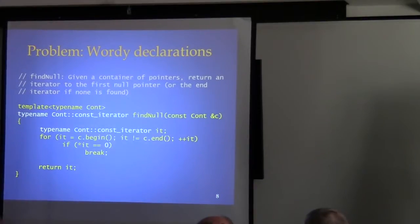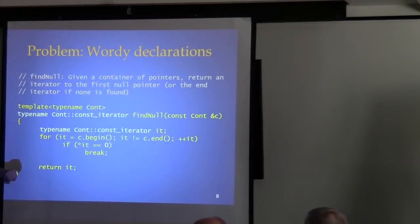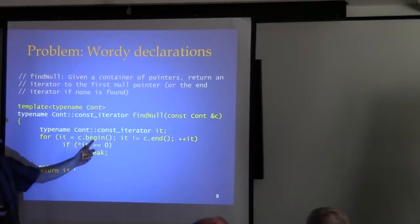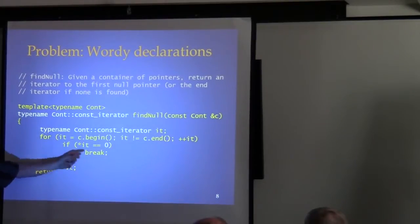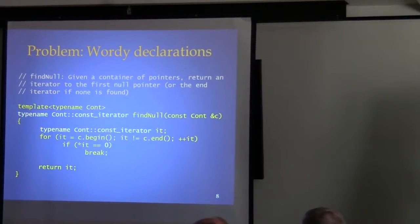So you have to say typename. We iterate across the container looking for a null — dereferencing each iterator, and if we find null we're done; otherwise we return the end iterator. Not real exciting, but there it is in old C++.